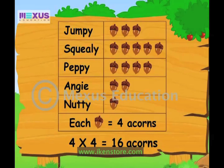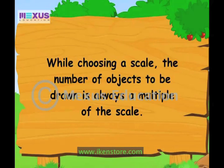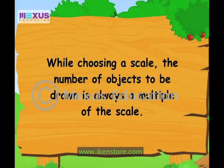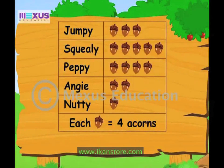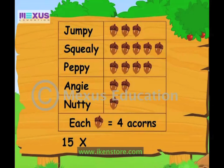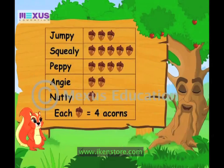Oh boy! That was a Peppy reply. So how do we choose a scale? We always choose a scale such that the number of objects is always a multiple of it. Normally, if you do not have to do too much drawing of symbols, I suggest keeping the scale as low as possible. Got it! Now tell me, how many acorns do your friends have overall? There are fifteen acorns drawn, so there must be fifteen multiplied by four, which equals sixty acorns in all. Good! See? Now you know how to read and draw picture graphs.